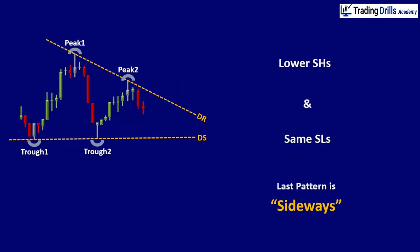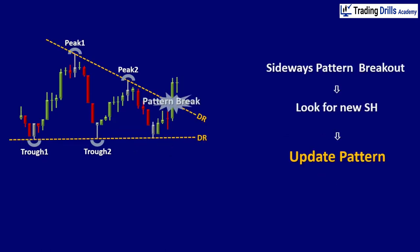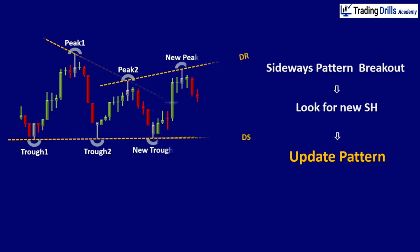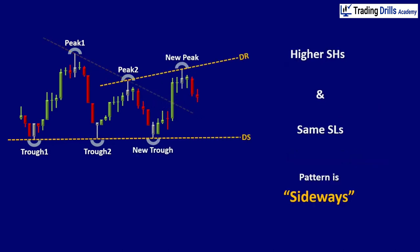If the price breaks the dynamic resistance of the current sideways pattern, look for new swing highs and update the dynamic channel. The new pattern could show a higher swing high but the same swing low, which is still another sideways pattern.